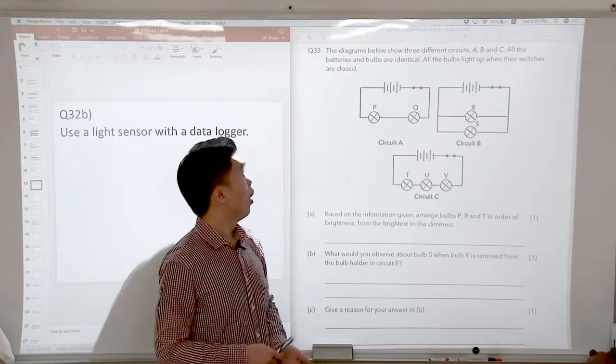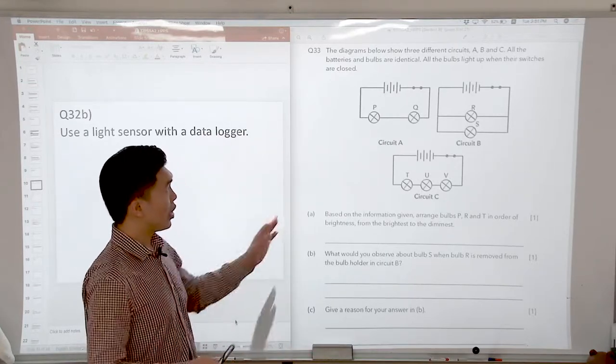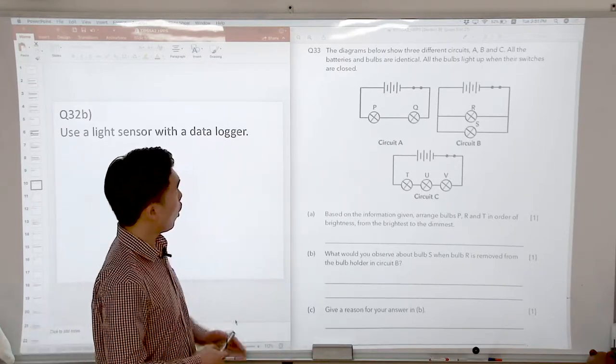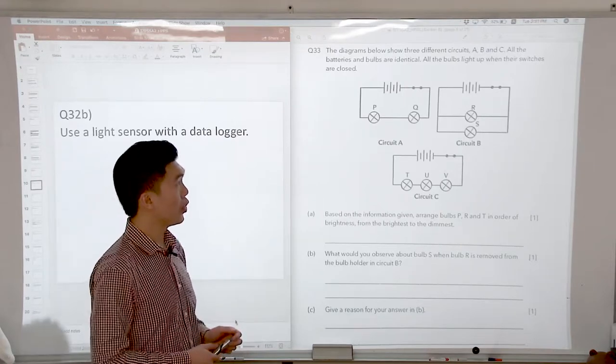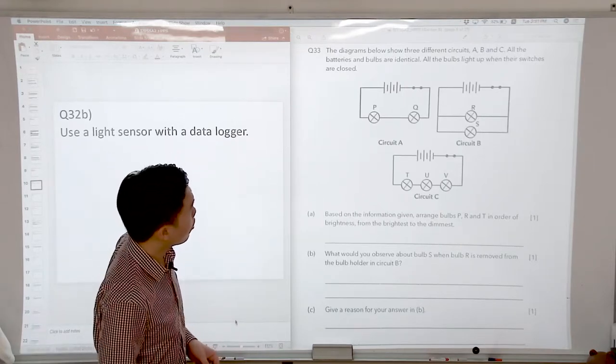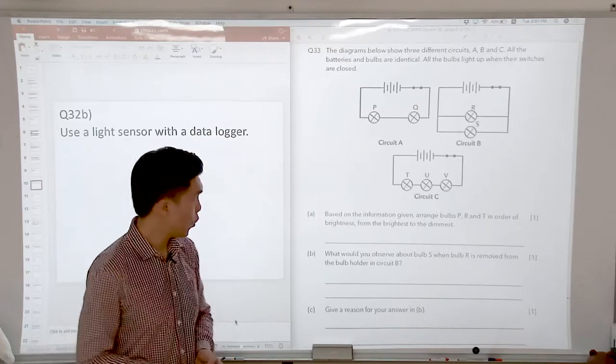Let's look at question 33 now. The diagrams below show three different circuits A, B and C. All the batteries and the bulbs are identical. All the bulbs light up when their switches are closed.